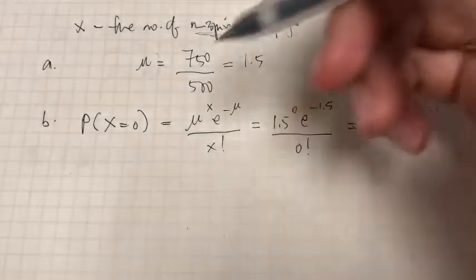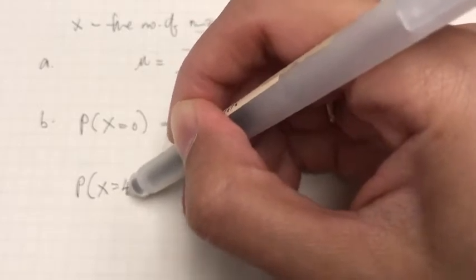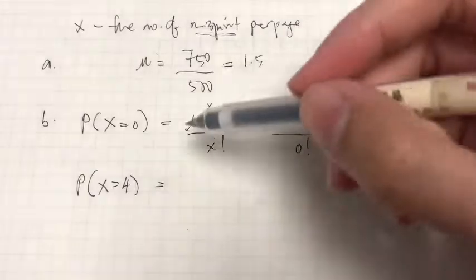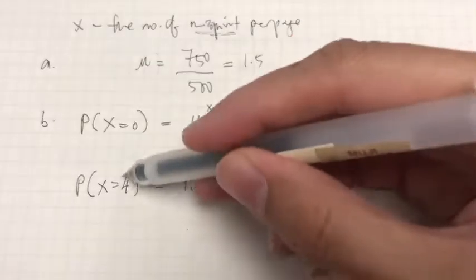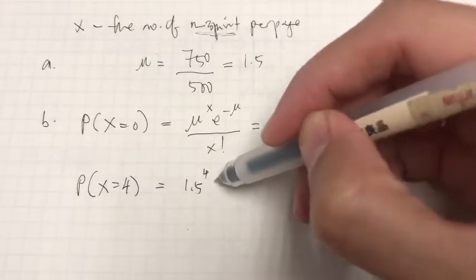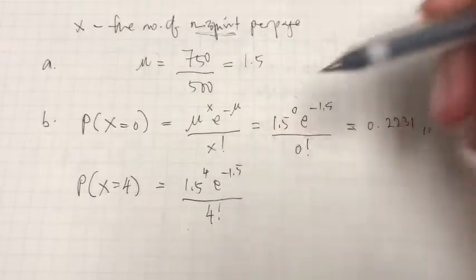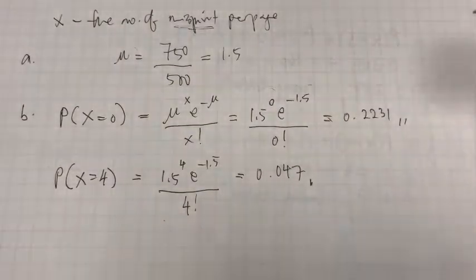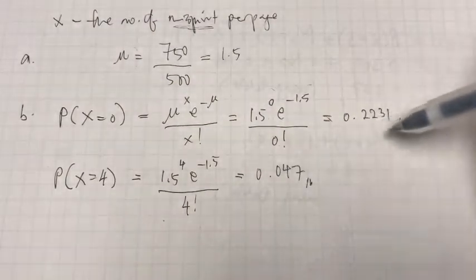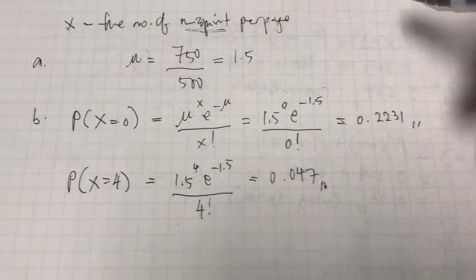The second part of B asks for the probability of exactly 4 misprints on one page. Using the formula with mu = 1.5 and x = 4: P(X=4) = (1.5^4 × e^(−1.5)) / 4!. Calculating this gives 0.047.